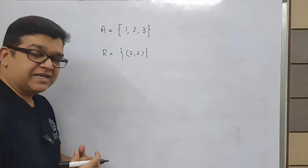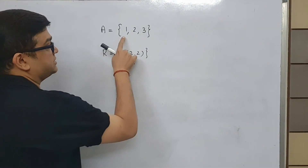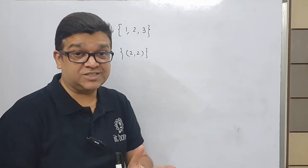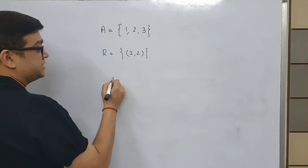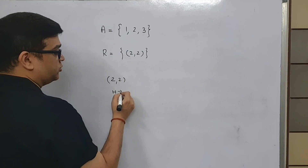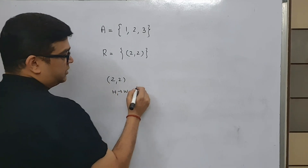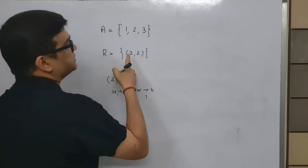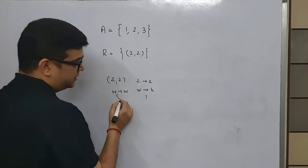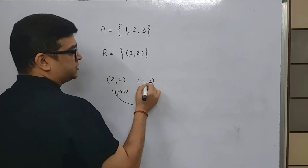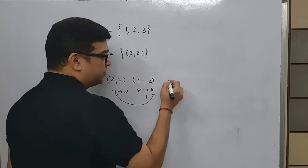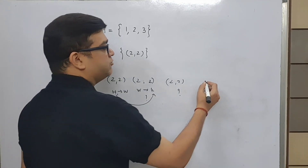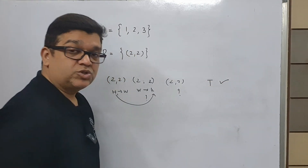Let us see one more small example for more clarity. This relation R is defined over set {1, 2, 3}. It has a single ordered pair and I want to know whether it is transitive or not. Look at this element (2,2): it is like husband related to wife. Now whether wife has a kid — whether 2 is related to something. Yes, 2 is related to 2. So whether husband accepts the kid — whether (2,2) is present. I can see with my eyes: yes, (2,2) is present. Therefore this relation is transitive.